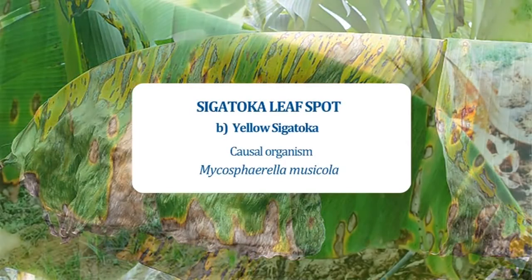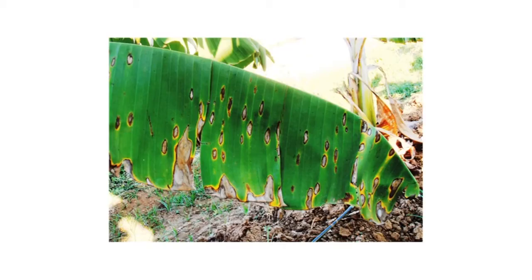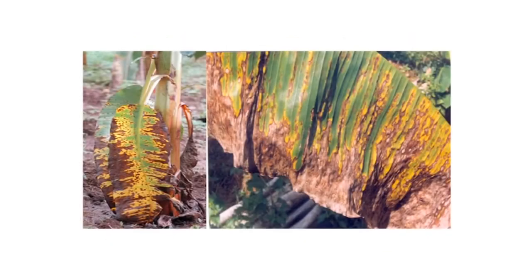The second type of Sigatoka is yellow Sigatoka, caused by Mycosphaerella musicola. The first symptom is the appearance of very small light green dots which elongate into a light green streak. The color of the streak changes to rusty brown, which elongates with widening. The streak becomes more elliptical, forming a definite spot with a sunken dark brown center, often surrounded by a yellow halo. The final stage has a grey dried-out center and an obvious black margin.